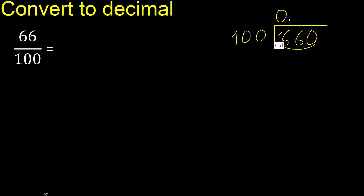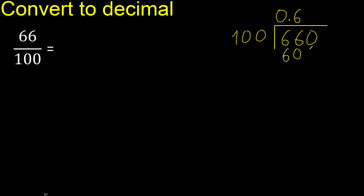100 is not less. 100 multiplied by which number is nearest to 660 but not greater? 100 multiplied by 7 is 700 — that is greater. 100 multiplied by 6 is 600.